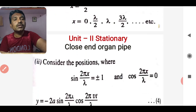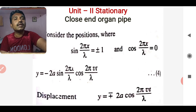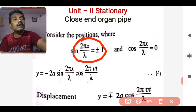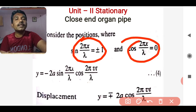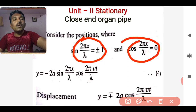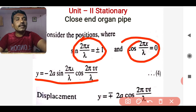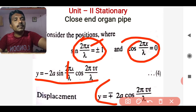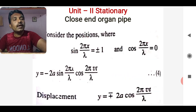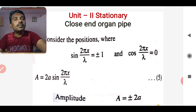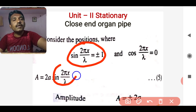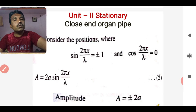Now considering the next position where sin(2πx/λ) = 1 and cos(2πx/λ) = 0. Substituting into equation 4, sin(2πx/λ) = 1 gives y = −2a · cos(2πvt/λ). This is the displacement. The amplitude A = 2a (since sin(2πx/λ) = 1, giving ±2a). So the amplitude is maximum at this position.